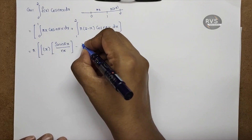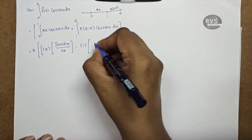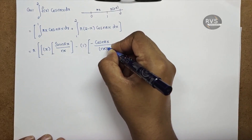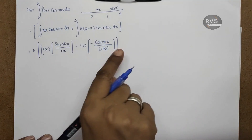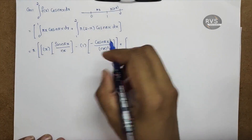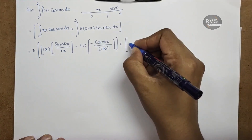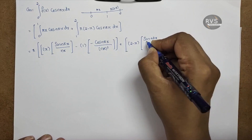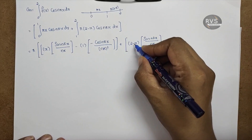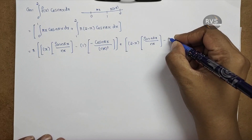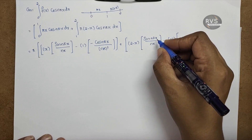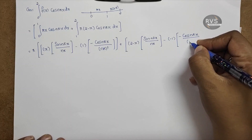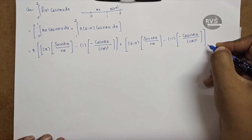Applying integration by parts: x into sin(nπx) in the integral, minus cos(nπx) by nπ, nπ is equal to nπ whole square. Then for the second part: π into (2 minus x) as first function, cos(nπx) in the integral gives sin(nπx) by nπ, minus of (2 minus x) derivative which is minus 1, into sin(nπx) integral giving minus cos(nπx) by nπ whole square. Limit is from 1 to 2.